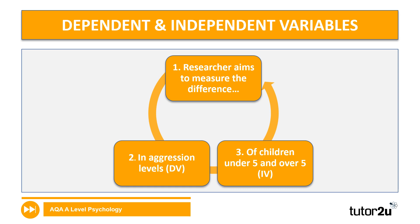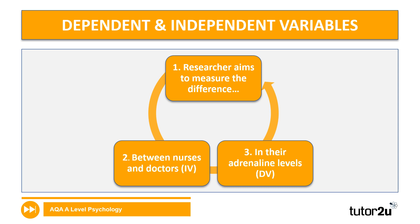One way to look at the interaction between dependent and independent variables is through this diagram. The researcher aims to measure the difference in the dependent variable — in this case, aggression levels — comparing children under five and over five, which is effectively our independent variable. Here's another example measuring the difference between nurses and doctors — that's our two groups — in their adrenaline levels, which is what we're measuring.